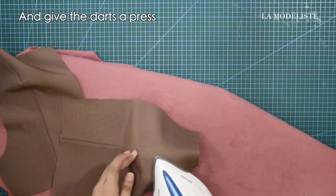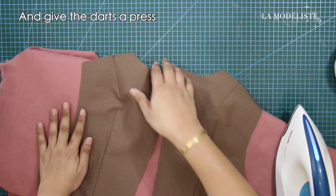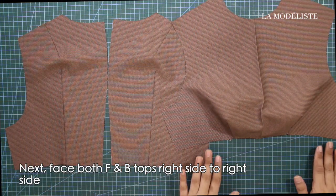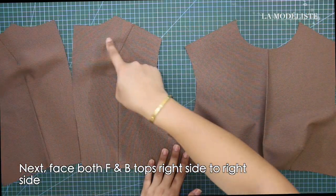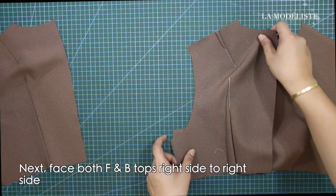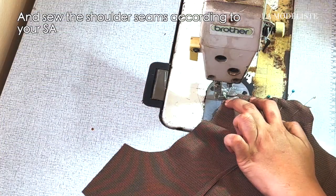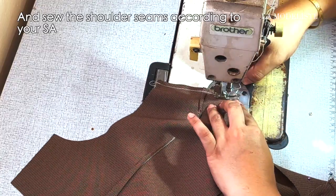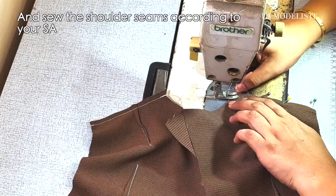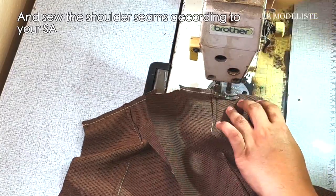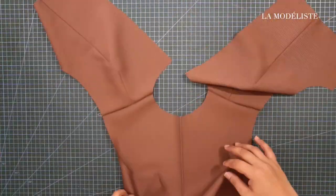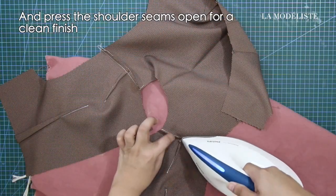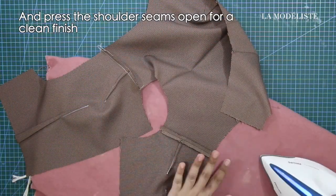And give the darts a press. Next, face both front and back tops right side to right side. And sew the shoulder seams according to your sewing allowance. And press the shoulder seams open for a clean finish.